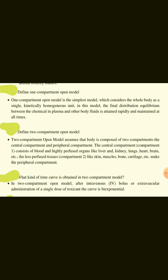Define two-compartment open model. The two-compartment open model assumes that the body is composed of two compartments: the central compartment and the peripheral compartment. The central compartment consists of blood and highly perfused organs like liver, kidney, lungs, heart, and brain. The less-perfused tissues — such as skin, muscle, bone, and cartilage — make up the peripheral compartment.